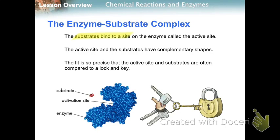The substrates bind to the enzyme in a place called the active site. They don't have the same shape — they have complementary shapes, so they fit together like a lock and a key, or like two puzzle pieces. They're that specific.